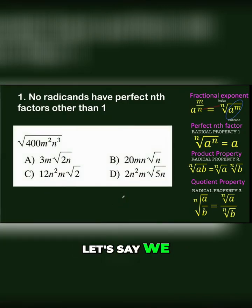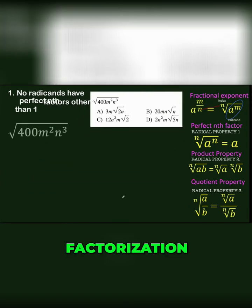Next example: the square root of 400m²n³. What is its simplest form? 400 is a big number, so let's get its prime factorization.